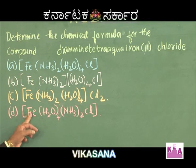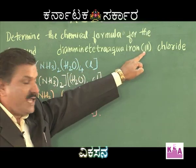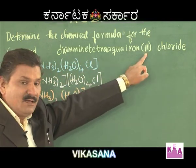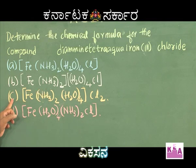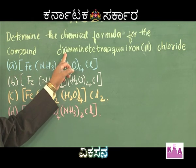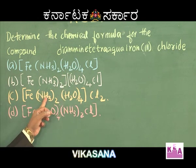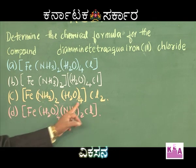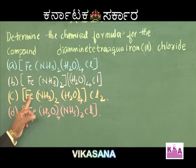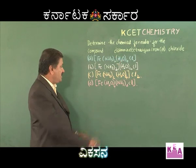The fourth option again gives iron in the +1 state. So options A, B, and D have iron in +1 state, but the given complex name has iron in +2 state. The complex with iron in +2 state is Option C. To cross-verify, the diamine and tetraaqua ligands are also listed in alphabetical order in Option C. The correct option is Option C.